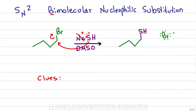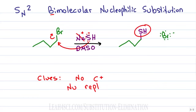The clues for this reaction: absolutely no carbocation intermediate. This is a fast reaction that happens in one step, and the nucleophile sits on the carbon where the leaving group used to be.